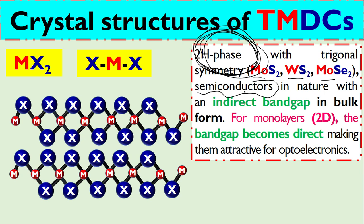The more interesting thing is when we use bulk—meaning three-dimensional—this material shows indirect bandgap. Indirect bandgap means there is a valence band and here is a conduction band, with phonon emission here. This is called indirect bandgap.